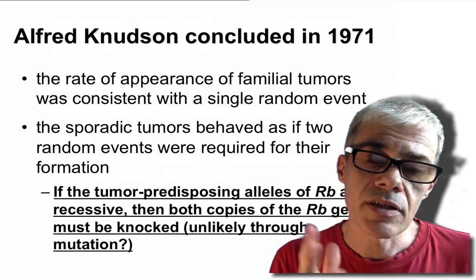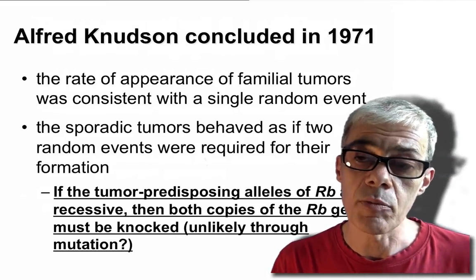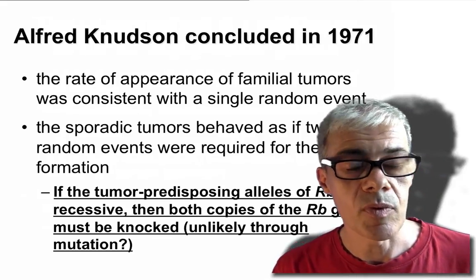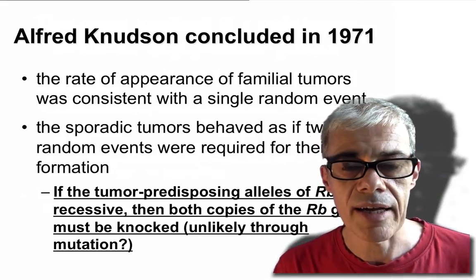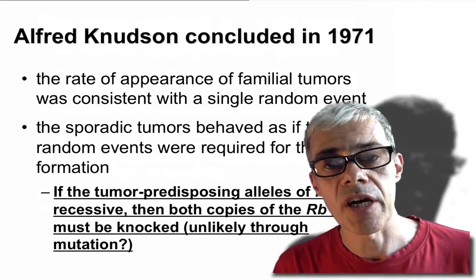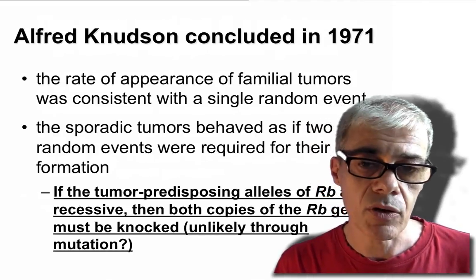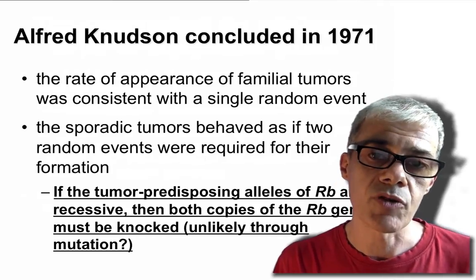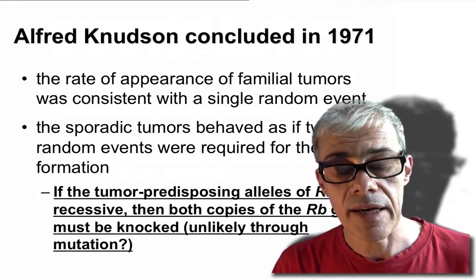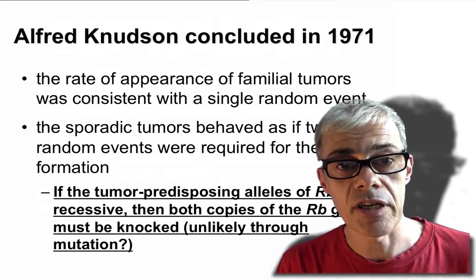Knudson helped us understand this process. He came up with what we refer to as loss of heterozygosity. I'll explain what heterozygosity is and describe some processes in the cell where you can lose it, and therefore lose the second copy of the tumor suppressor gene.